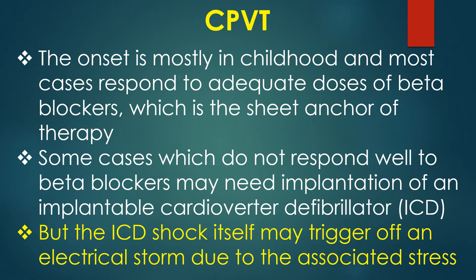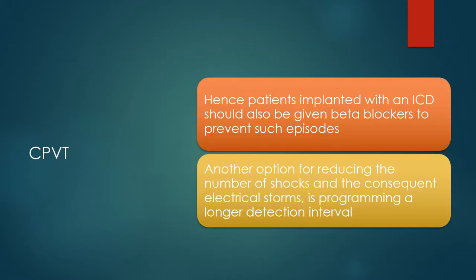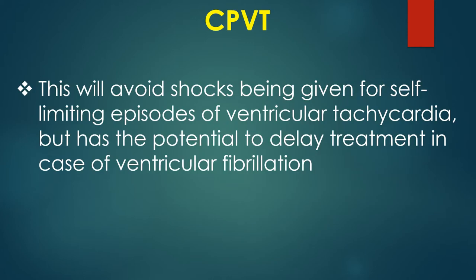The ICD shock itself may trigger an electrical storm due to the associated stress. Hence, patients implanted with an ICD should also be given beta blockers to prevent such episodes. Another option for reducing the number of shocks and consequent electrical storms is programming a longer detection interval. This will avoid shocks for self-limited episodes of ventricular tachycardia but has the potential to delay treatment in case of ventricular fibrillation.